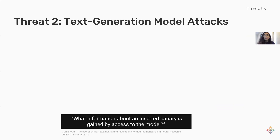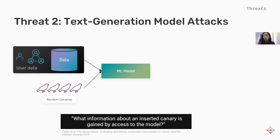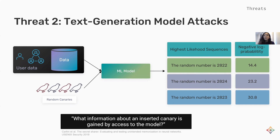In order to measure this unintended memorization in text generation models, Carlini et al. proposed the exposure metric, which answers the question: what information about an inserted canary is gained by access to the model? To measure this metric, random canaries — strings of random tokens — are inserted in the training data of the language model. Once the model is trained, the probability assigned to different possible canaries is measured by feeding them to the model. For instance, if the actual canary is 2822, the smallest negative log probability is assigned to this sequence, indicating it has the highest probability. This probability is used to rank different canaries, and the exposure for each canary is calculated based on that ranking. The higher the exposure, the easier it is to extract the secret canary.